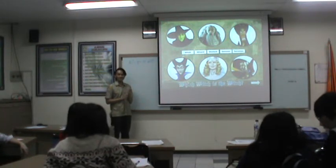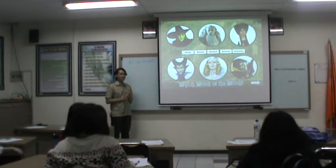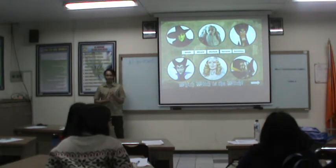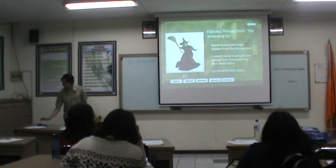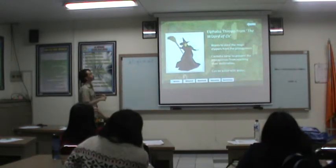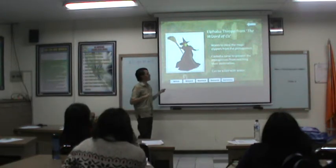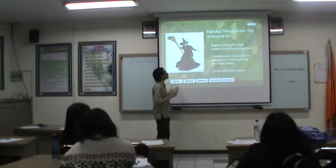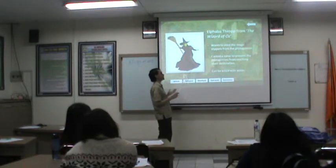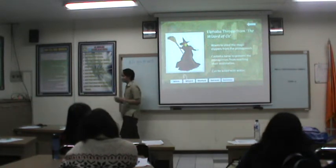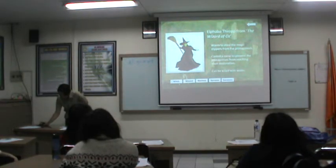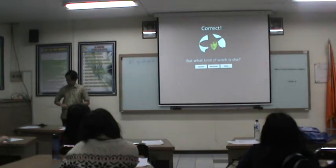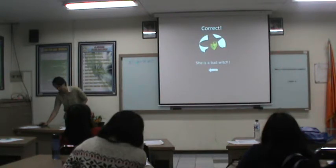Let's try the first character. Elphaba Throck from the Wizard of Oz — she wants to steal the magic slippers from the protagonist, she has been cursed to prevent the protagonist from reaching their destination, and she can be killed with water. Which one is she? Students respond: witch. What kind of witch? Bad! She is a witch.